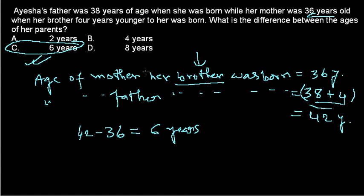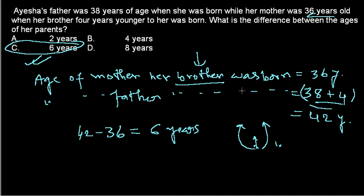There is nothing rocket science about it, but you need to read carefully. In all these problems of age, you need to fix a point — a particular time point — and then calculate everybody's age with respect to that point. If you change this time constant, the ages will vary, and that is the major trick in this question. They just change the time point, but you need to bring them to the same point so that you can calculate the age difference perfectly.